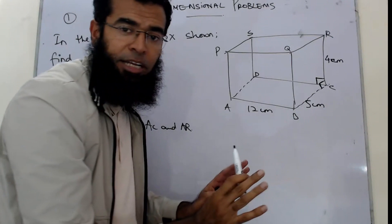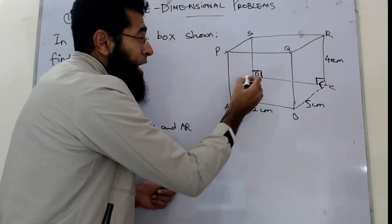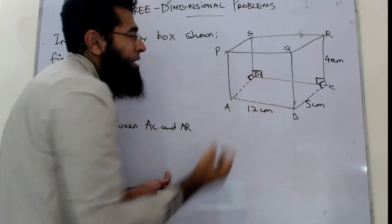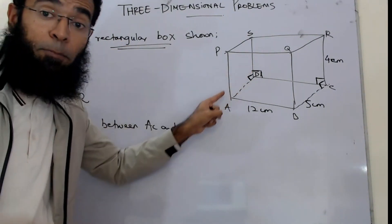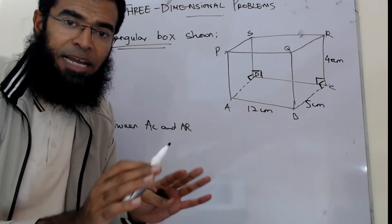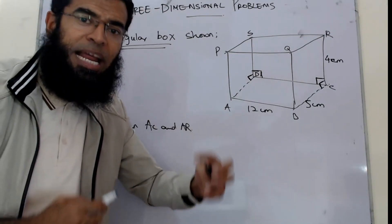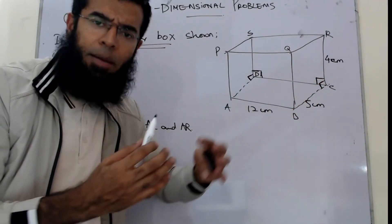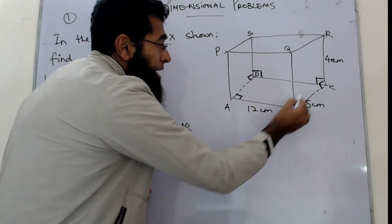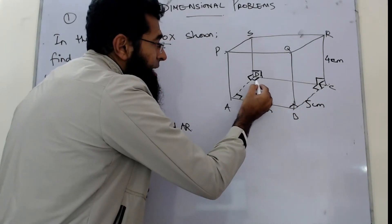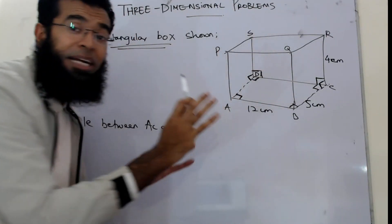The height with the length of the floor is 90 degrees, and the height with the width of the floor is also 90 degrees. Since the question says it's a rectangular box, the base is a rectangle, and all angles of a rectangle are 90 degrees. The same applies to the top face — it's also a rectangular surface.